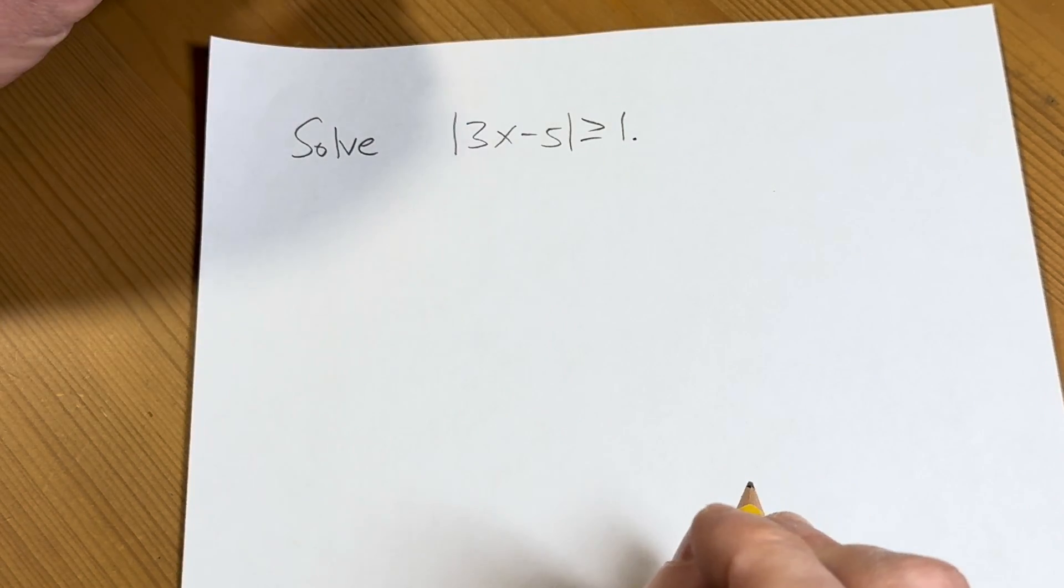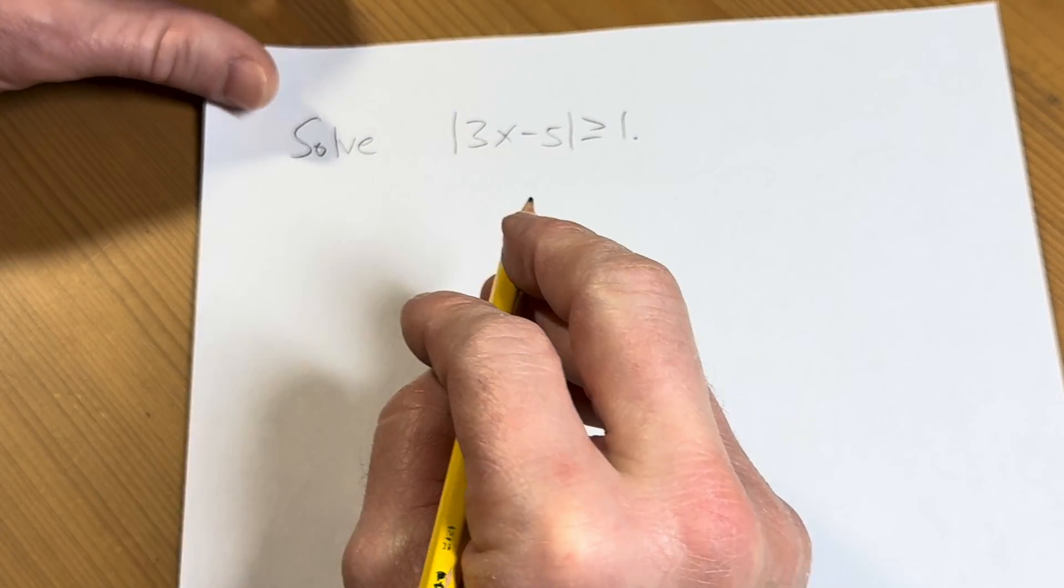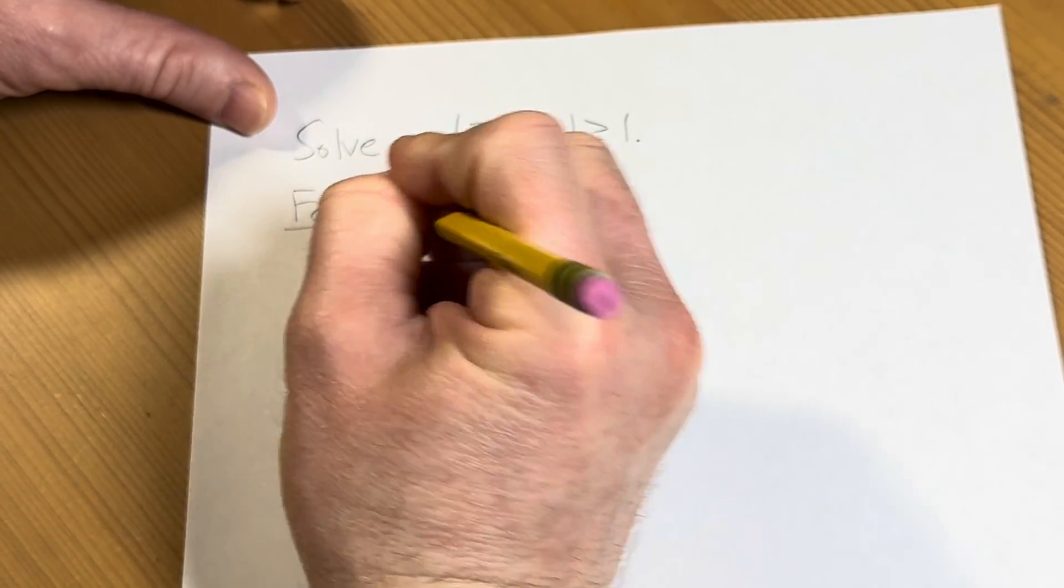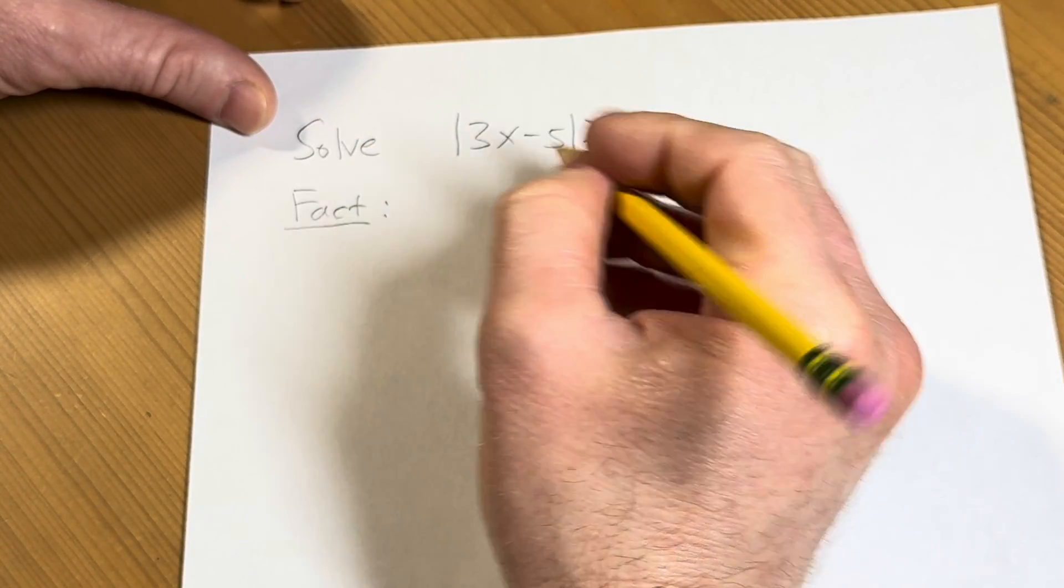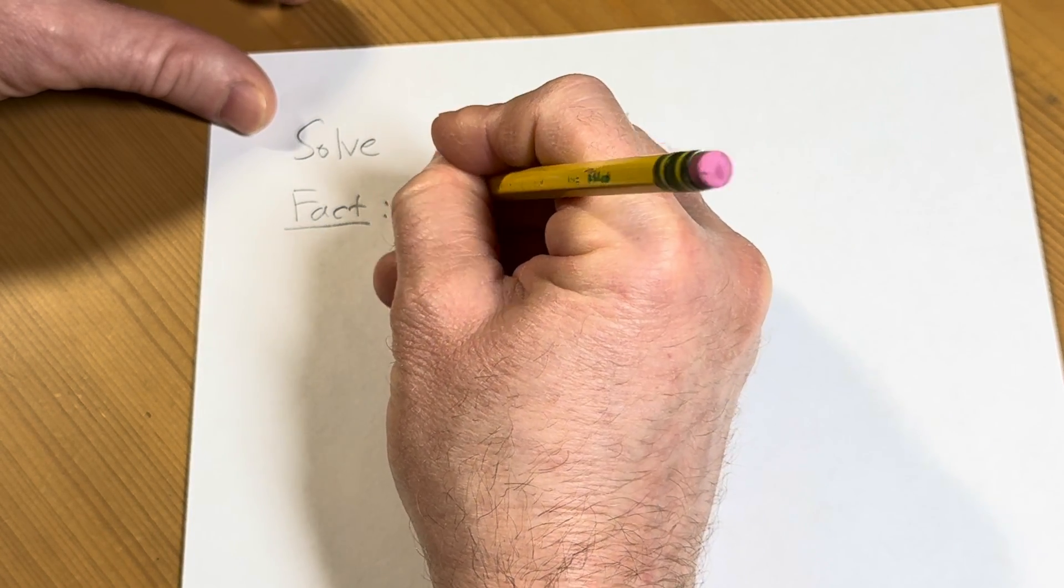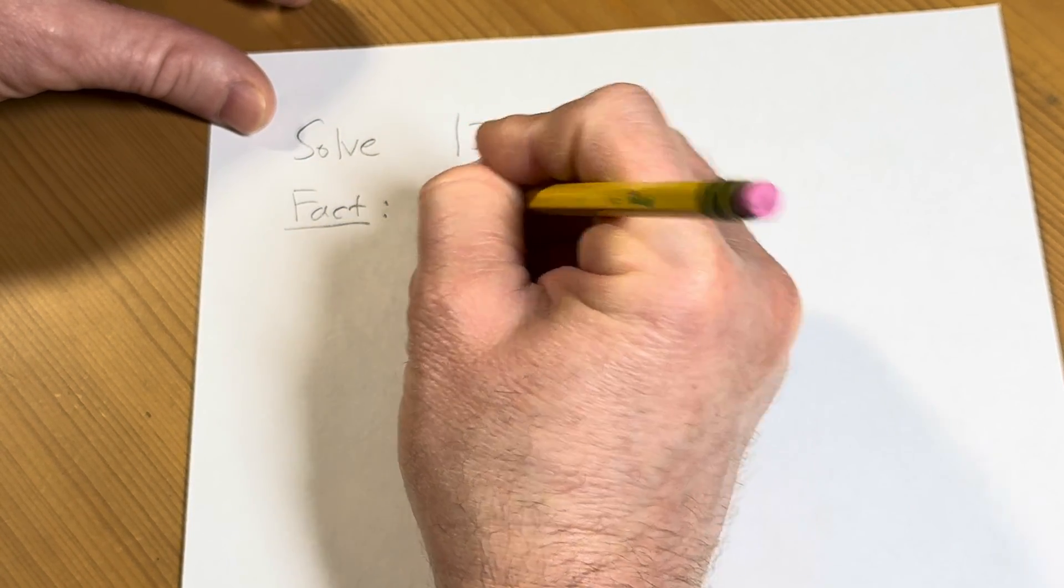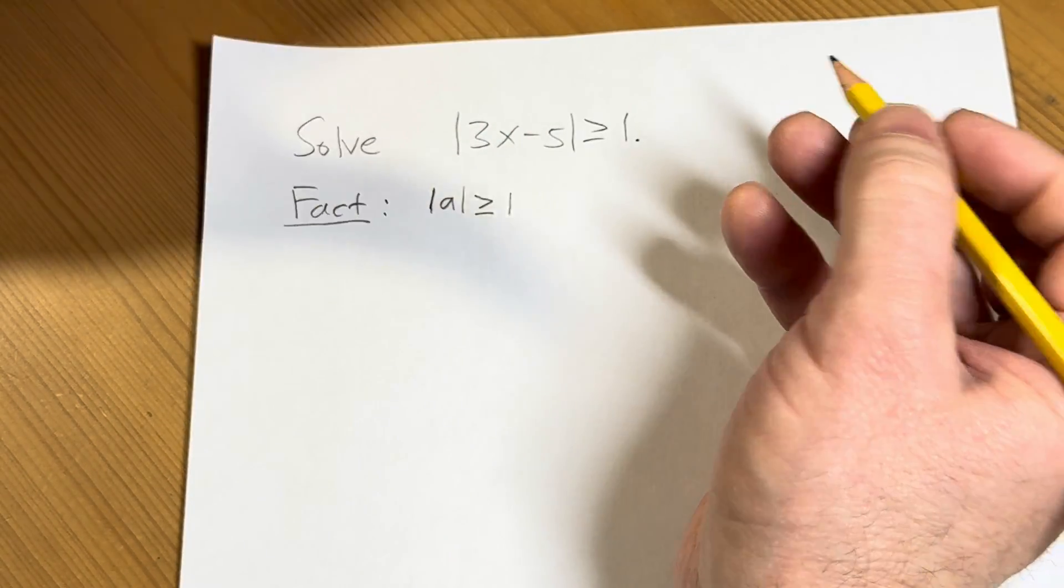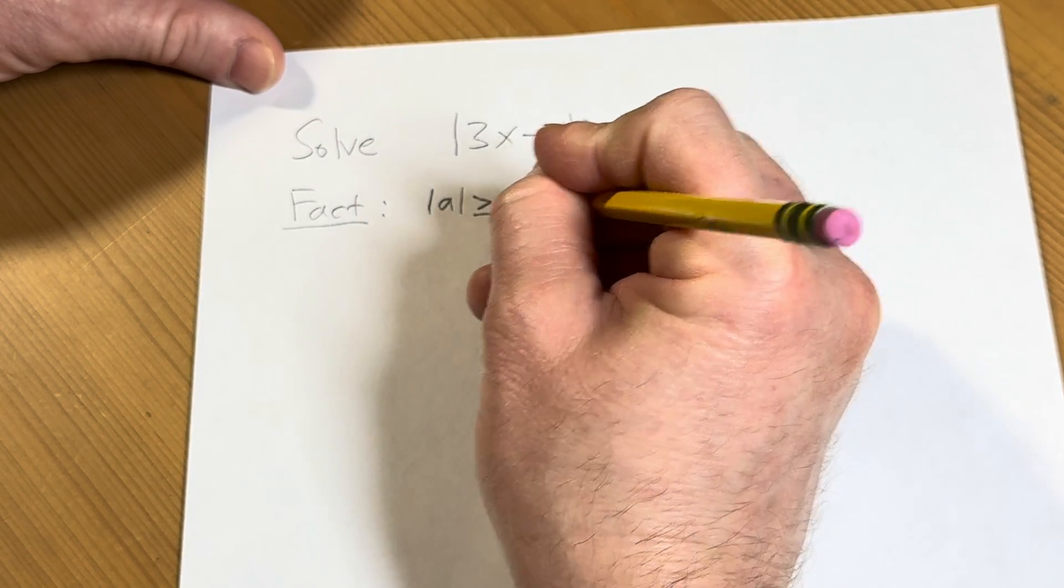So before I go through this question, let me just give you a fact. Let's say if you have the absolute value of a greater than or equal to 1, because we have a 1 here, what does this mean?